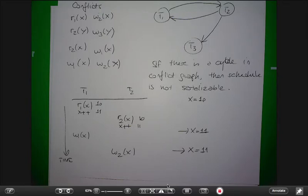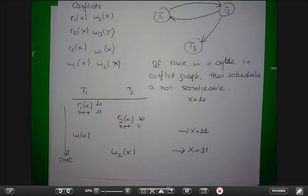Because they are executing at the same time and changing the same data in a bad way, we have lost some information. If you had executed 1 before 2 or 2 before 1, the final result would have been 12. You cannot know what these transactions are going to do, but you can at least make sure they cannot execute in a way that erases each other's results.